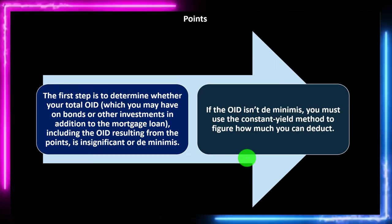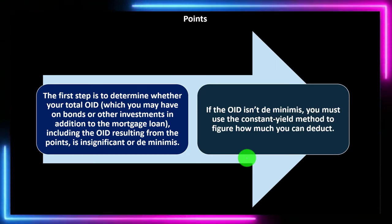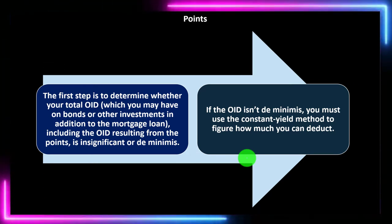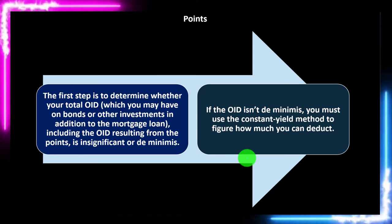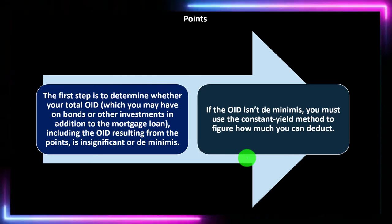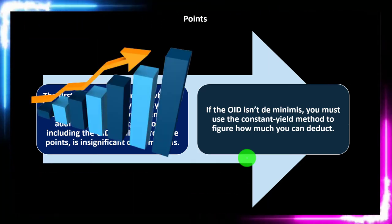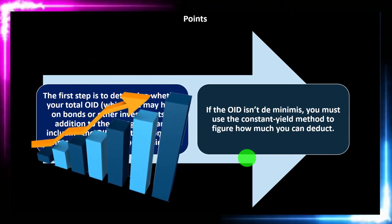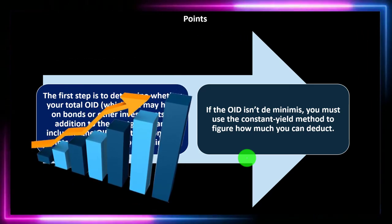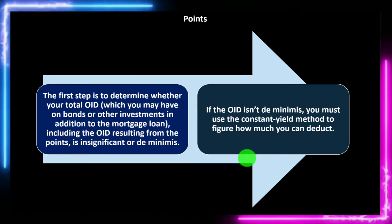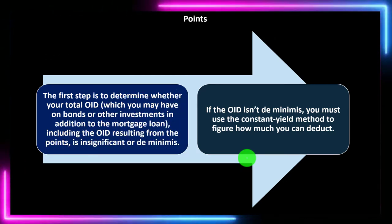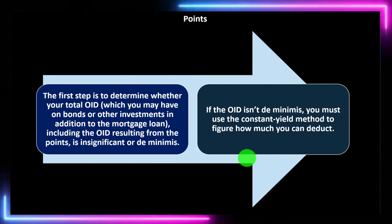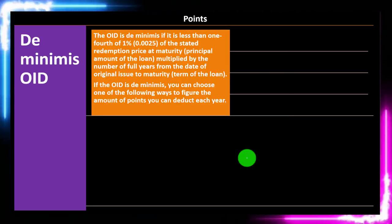If the OID isn't de minimis — if it's fairly significant — then you must use the constant yield method to figure how much you can deduct. The constant yield method is more complicated because the rate could change as time goes, kind of like on an adjustable loan. A straight-line method would be the easier thing to do, but not exactly proper.